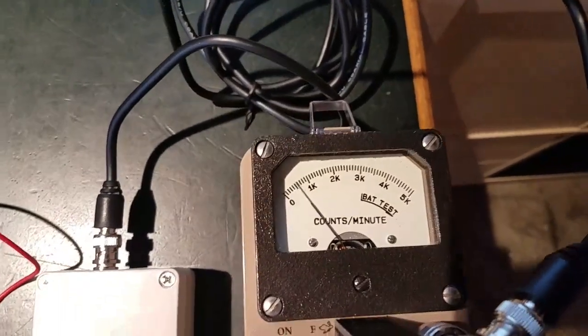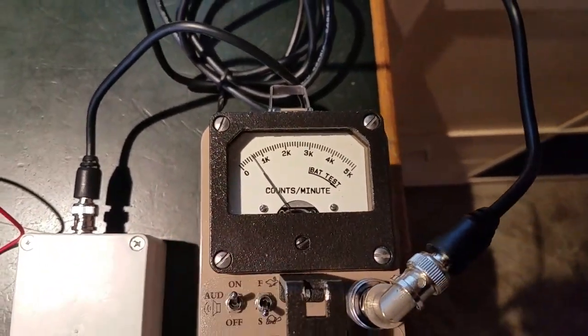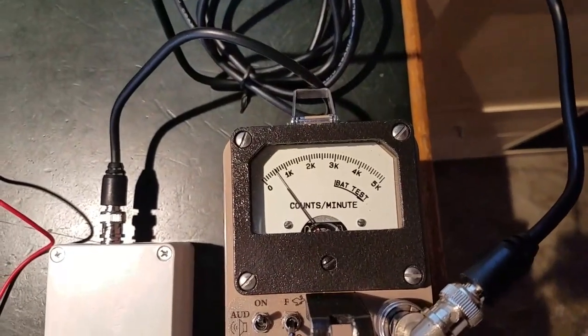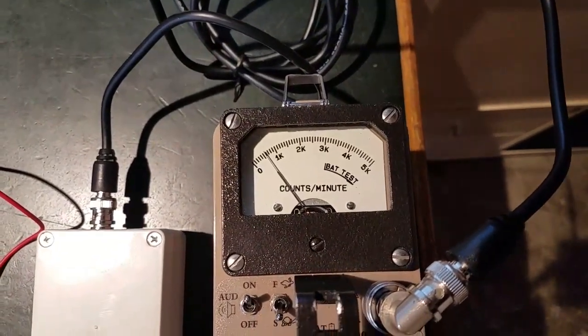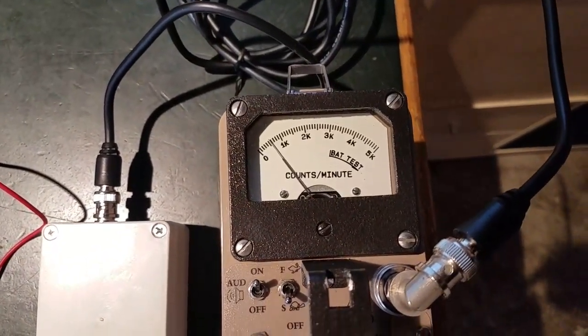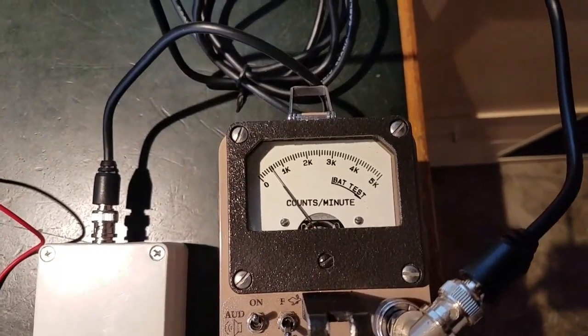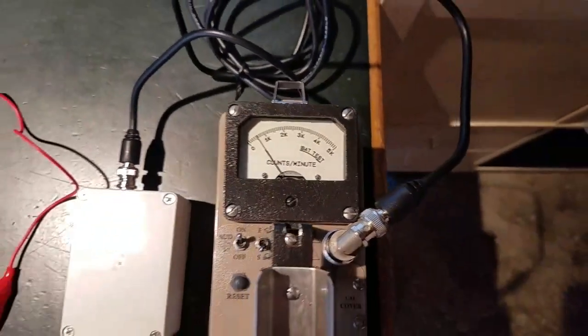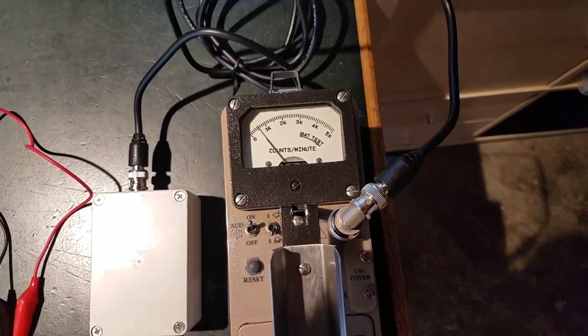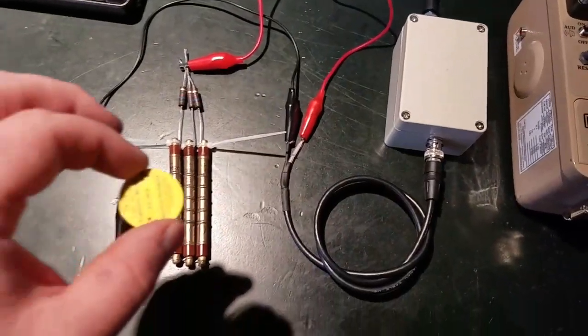So I'm also going to switch this to slow mode so we can get a better average. Yeah, 500 counts per minute background, that's not bad at all. Okay, hit pause, be right back. Okay, I'm back.